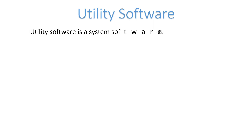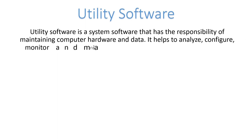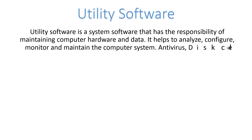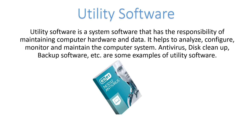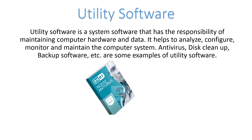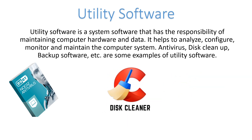Utility software is a type of system software responsible for maintaining computer hardware and data. It helps to analyze, configure, monitor, and maintain the computer system as well as the data inside it. Examples include antivirus software, disk cleaning software like Disk Cleaner, and backup software.